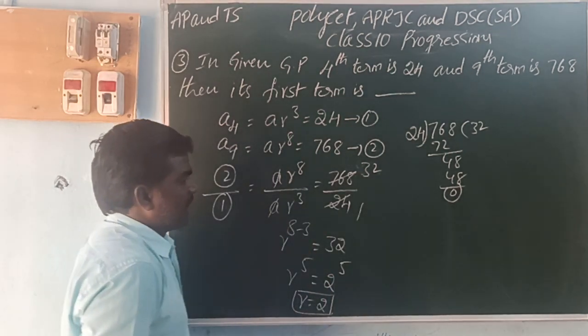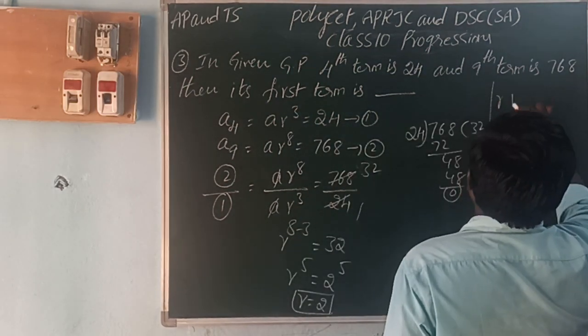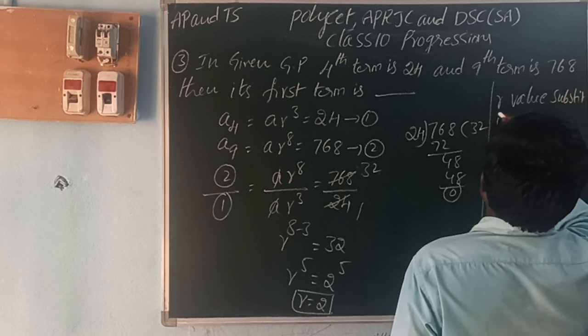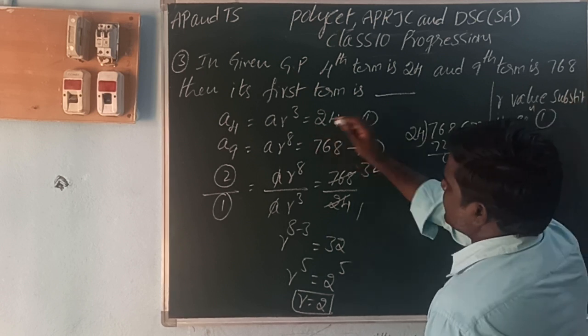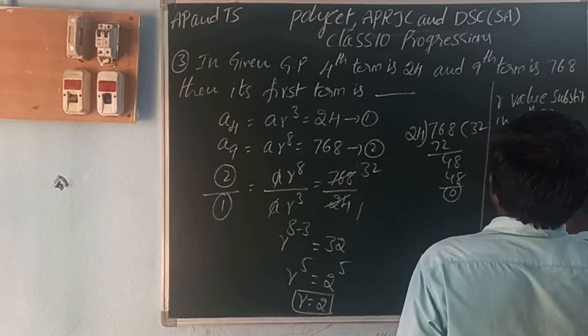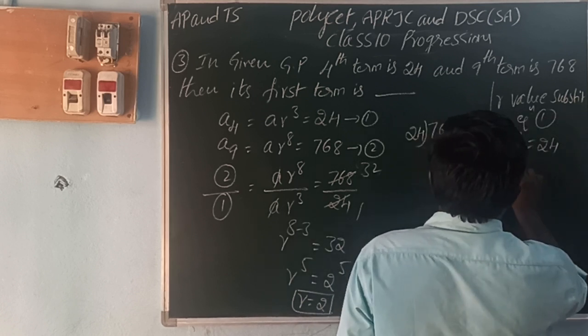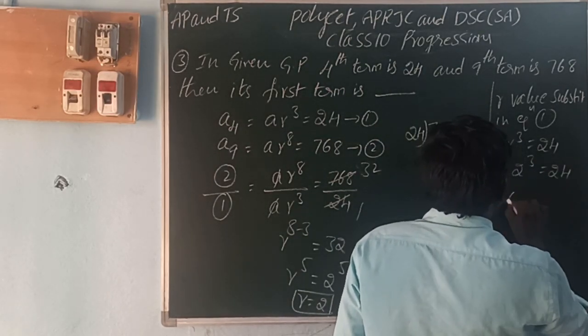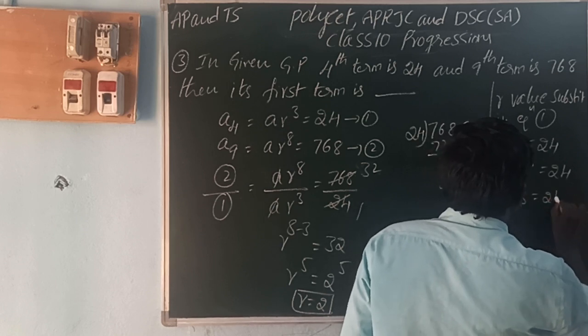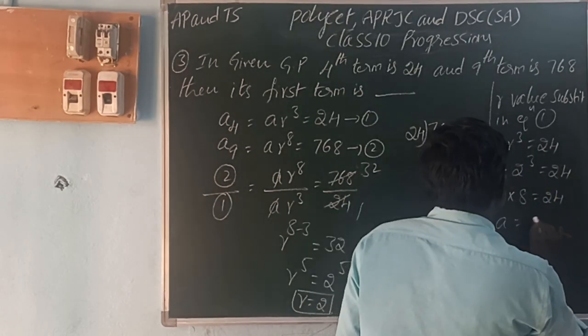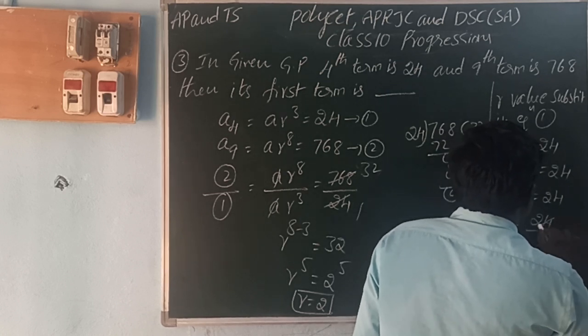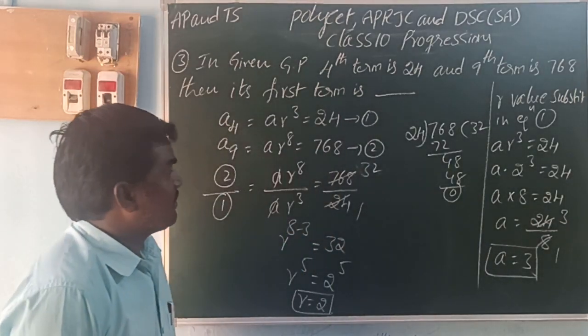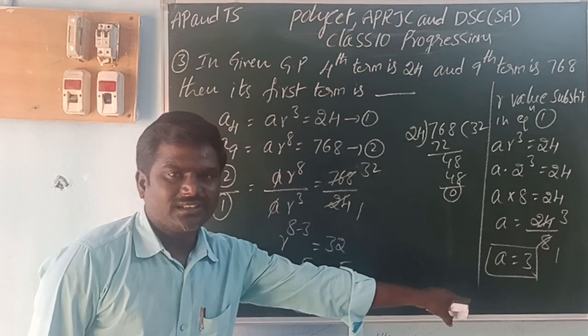R equals 2. This R value we can substitute in equation 1. Equation 1 is A * R^3 = 24. A into R, R is 2, so 2^3 = 24. A into 2^3 = A into 8 = 24. A = 24 by 8. A = 3. The first term is 3.